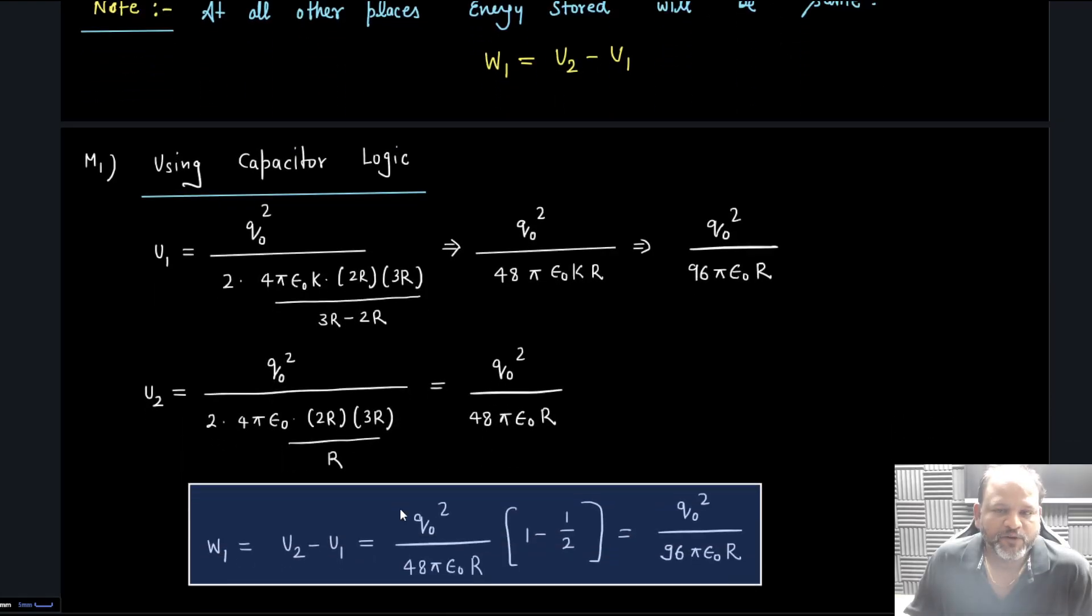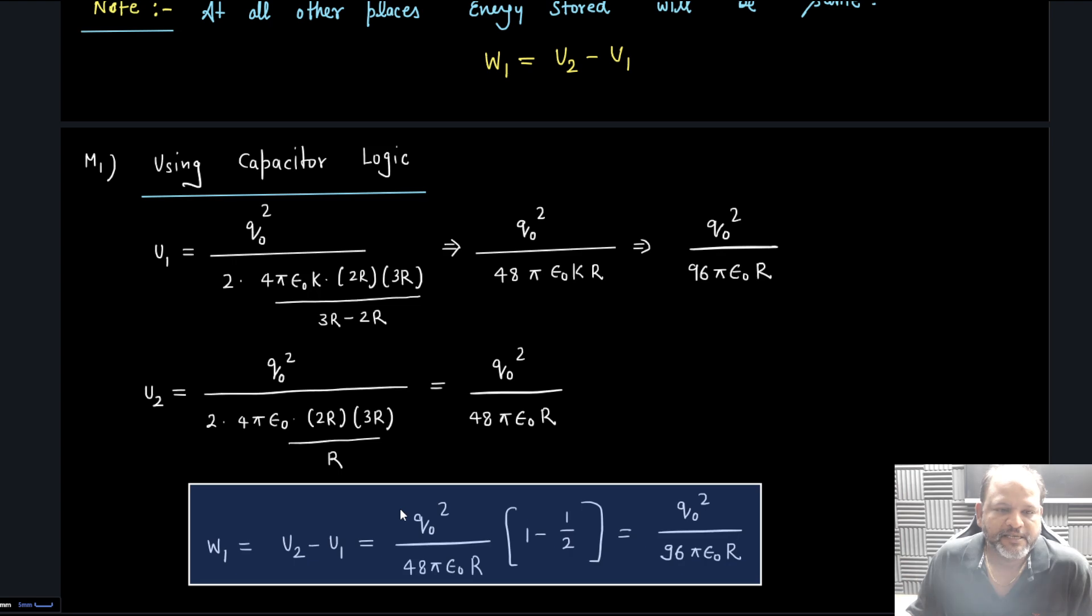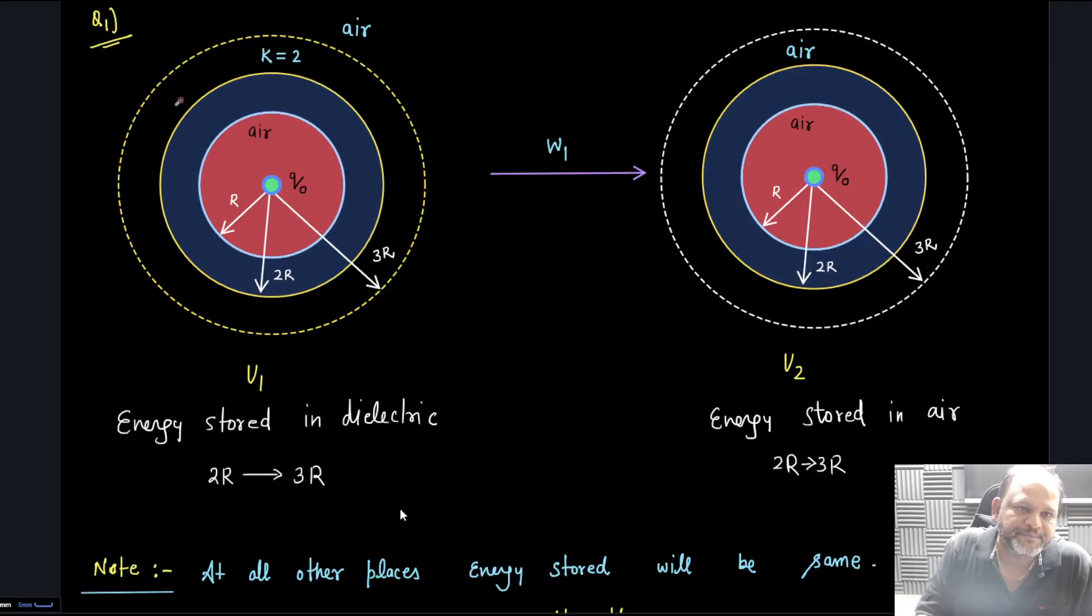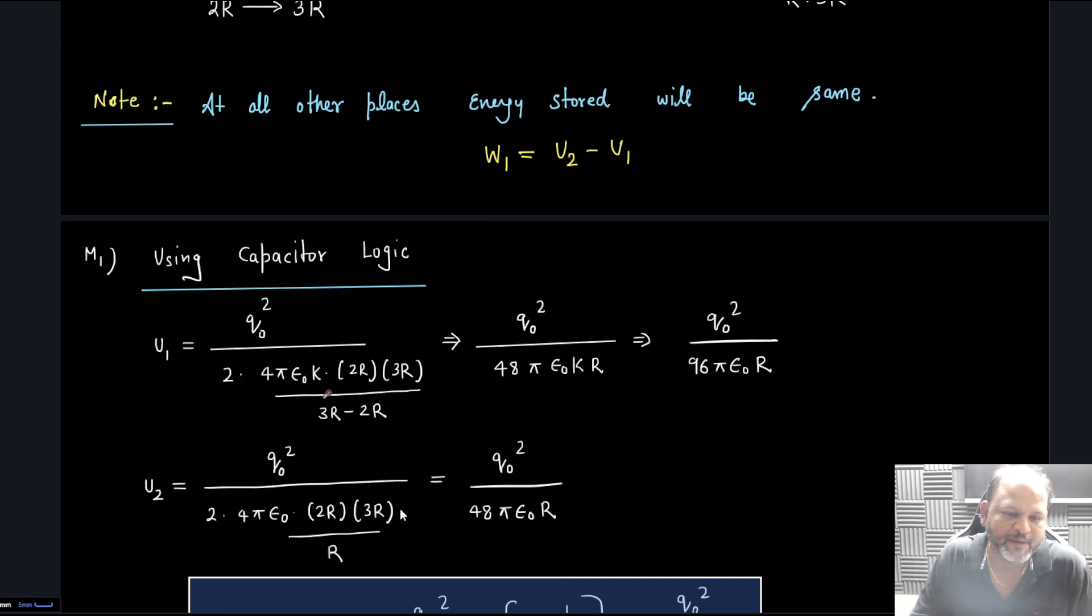First I'm going to use the capacitor logic. U1 can be calculated as q0 square by 2c, where c is spherical capacitor formula 4π epsilon 0 epsilon k r1 r2 by r2 minus r1. If I simplify we are getting q0 square by 96π epsilon r.